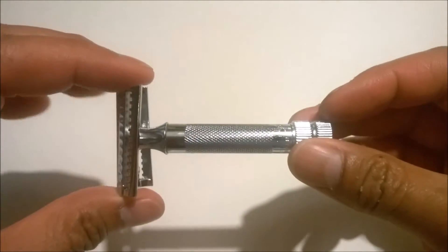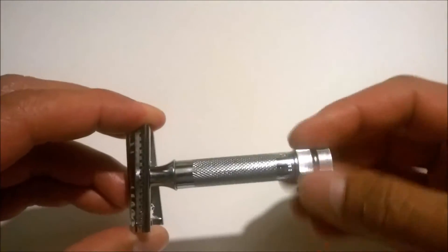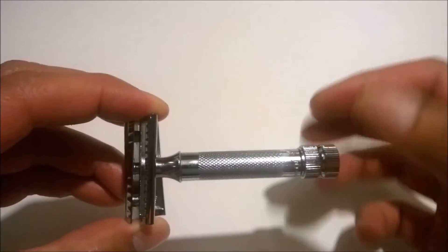The 37C slant bar is a two-piece razor so the cap is removed by twisting the knob at the base of the handle.